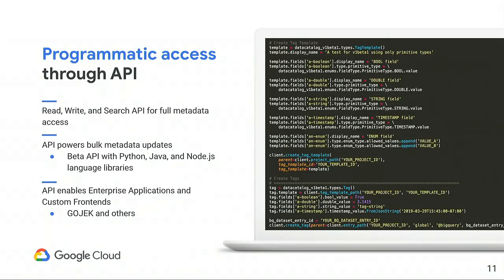In addition to the UI, if you have lots of data to annotate, you can do bulk updates of metadata through the API. In beta, we're supporting Python, Java, and Node.js language libraries to make API integration easy programmatically. The API enables customers to build enterprise applications specific to their needs, and also allows customers to build their own front end using the Data Catalog backend. Gojek is one such customer — they'll be on stage shortly to demo what they've built.